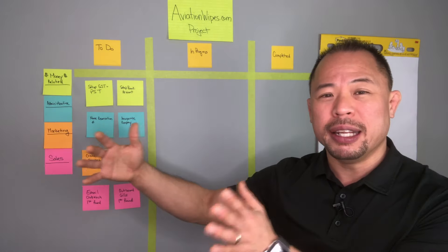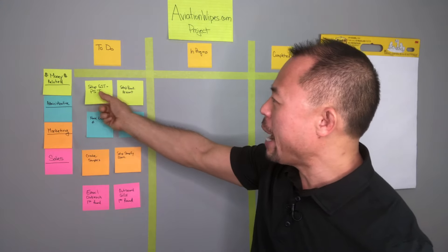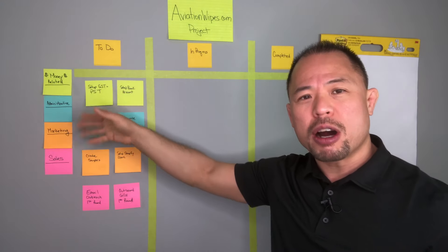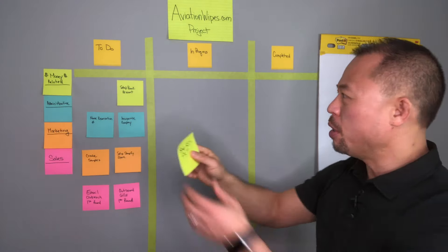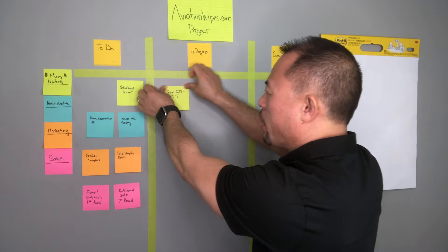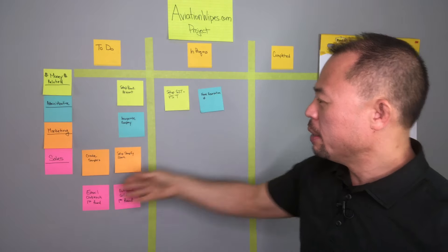So in terms of how the Kanban works, if I have something that I want to knock off on my to-do list, it's pretty simple. I just take the post-it note and put it in my in-progress section. You can have several things on the go like this.